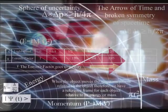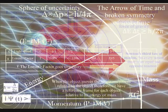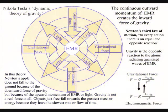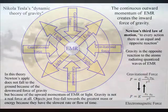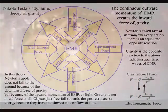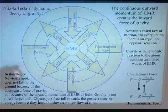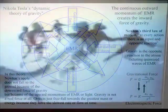This is true for the smallest creature as it is for the largest planet, and therefore Newton's universal law of gravity is part of this process. In this theory, Newton's apple does not fall to the ground because of the downward force of gravity, but because of the upward momentum of electromagnetic radiation or light. Gravity is not a real force at all — it is a secondary force to the electromagnetic force. Objects just freefall towards the greatest energy because it has the slowest rate of time, or the greatest time dilation.